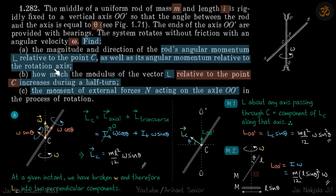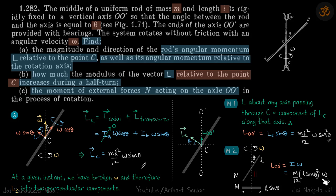For the second part, we find the angular momentum relative to the rotation axis OO'. In Method 1: every particle on the rod rotates about the same axis. We can compress the rod so that it appears equivalent — the effective length becomes l·sinθ. Therefore, the moment of inertia about OO' is m·(l·sinθ)²/12, and the angular momentum about the axis is m·(l·sinθ)²/12 · ω.